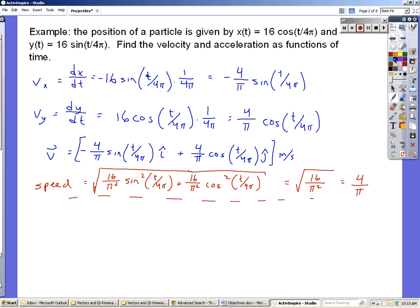Okay, next, we need to find the acceleration. So the x component of the acceleration is the derivative of the x component of velocity. So we take the derivative again, we get negative 4 over π, derivative of sine is cosine. And chain rule gives us another factor of 1 over 4π, so we end up with negative 1 over π squared times the cosine t over 4π.